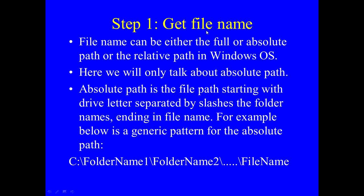Step number one is you need to get the file name. The file name can be either the full or absolute path or the relative path in Windows. Here we'll only talk about the absolute path. The absolute path starts with a drive letter separated by slashes, then folder names, and finally ends in the file name with its extension. For example: C:\folder1\folder2\filename.extension.